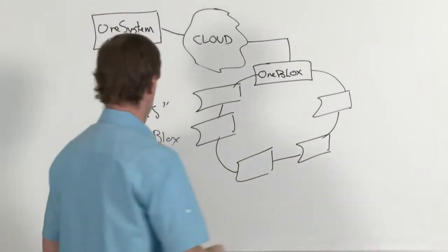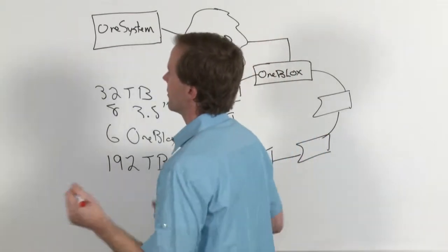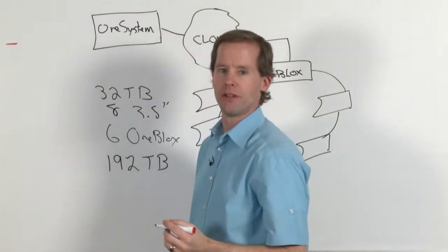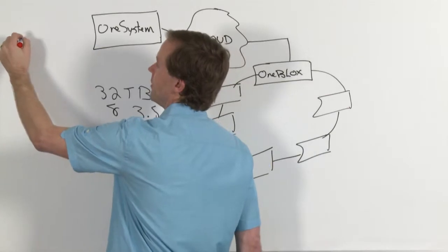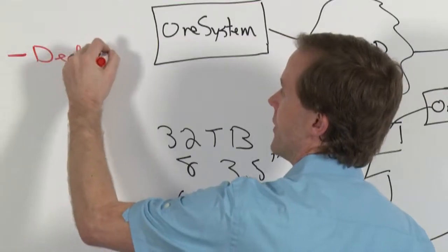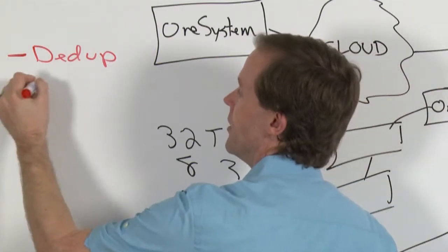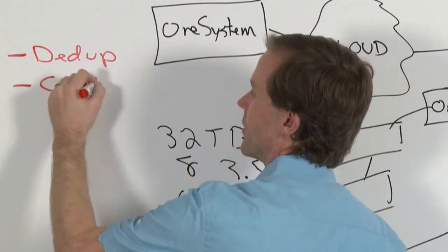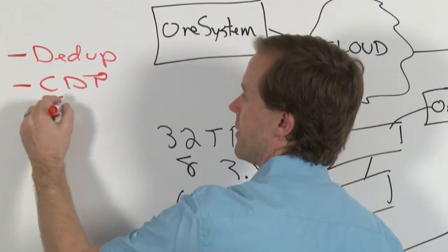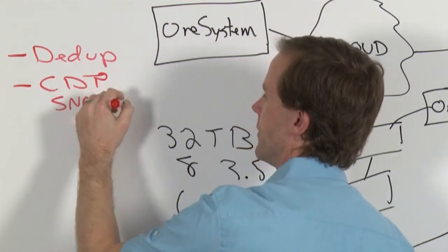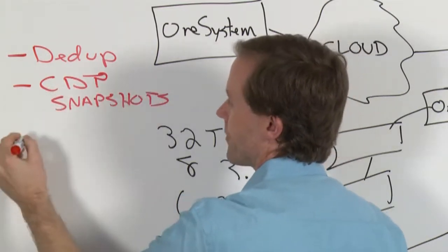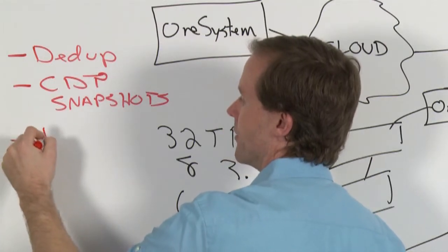To give you an idea of how that gets deployed and what features we support on top of that, we do deduplication. This is primary storage deduplication in your main workload. We do continuous data protection, snapshots. We do replication.